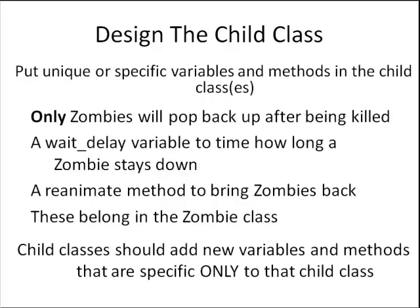How do you properly design a child class like zombie? Put the unique or specific variables and methods in the child class. For example, kill a mutant or droid and it stays dead. But a zombie object will pop back up after a short delay when blasted. Any variable or method used to reanimate a zombie should be in the child class. Since this behavior is unique to the zombie, code, variables and methods that reanimate the zombie should always go in the child class.